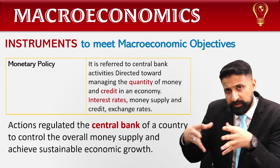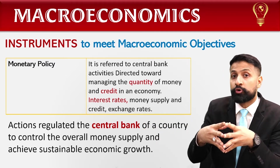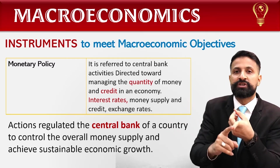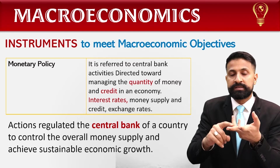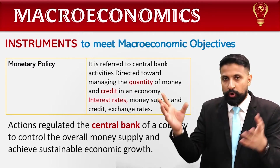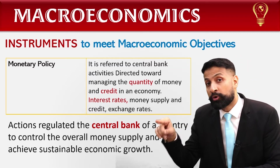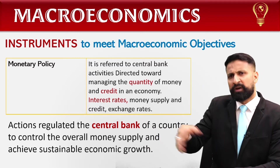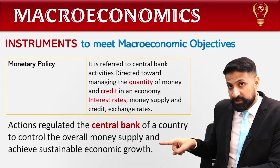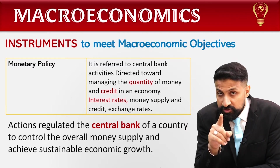اور achieve the sustainable economic growth۔ Economic growth کے indicators کیا ہوتے ہیں — quickly repeat کر دیتا ہوں: GNP، GDP، GNI، NNI، personal income، disposable income، per capita income، GDP per capita — یہ سارے numbers positive ہونے چاہیں، یعنی economy grow کر رہی ہے۔ اس definition کے بعد اوپر والی definition پڑھیں: it is referred to central bank's activities directed toward managing the quantity of money۔